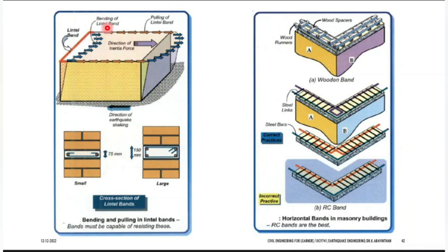How to provide this kind of lintel: if you are providing small lintels, use at least 75 mm thickness of concrete — that is 7.5 cm — with at least two rods. If the load is large and the structure height is also large, 150 mm height is required for this lintel, with four bars and stirrups. This is for resisting bending and pulling of the lintel band.